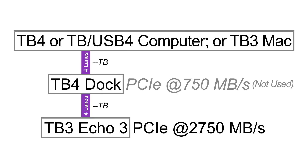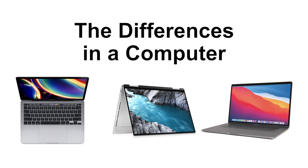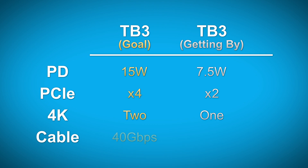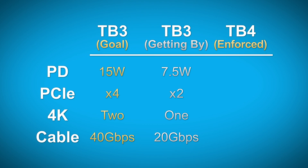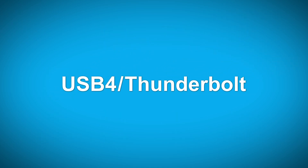A Thunderbolt 4 hub or dock can pass through four lanes of PCIe to its downstream Thunderbolt ports, but you must have a Thunderbolt 3 device to use all of it. Now let's talk about differences in a computer. Thunderbolt 3 was a loose standard — 15 watts of power delivery was the goal but you could deliver only 7.5 watts; four lanes of PCIe was the aspiration but you could connect only two; two 4K monitor support was the goal but you could get by with one; and 40 gigabit cables were ideal but you could sell a 20 gigabit cable. Thunderbolt 4, however, is a tightly enforced standard: 15 watts of power delivery, four lanes of PCIe, two 4K monitor support, and 40 gigabit per second cables — no exceptions. If you want exceptions, you can call your port USB4 or a generic Thunderbolt without the four.